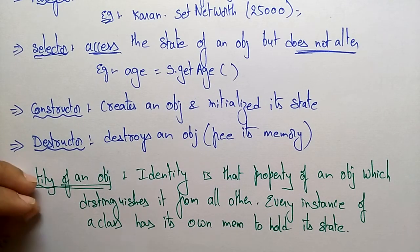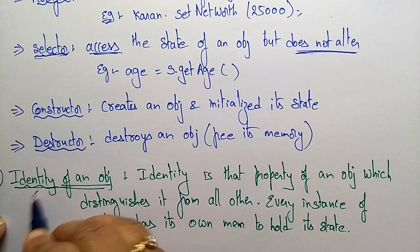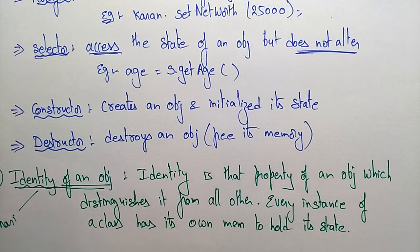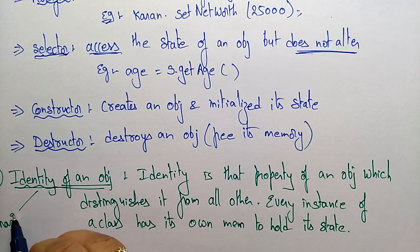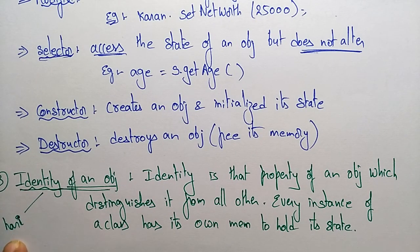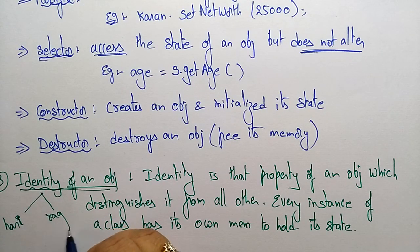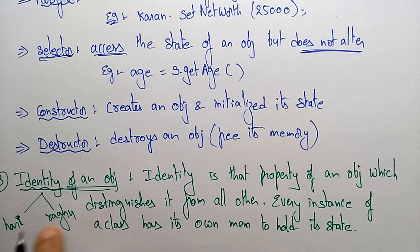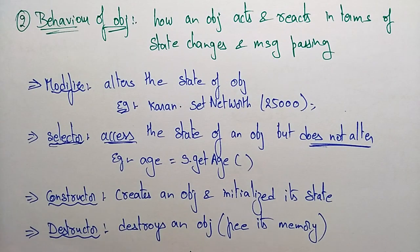In the previous example, Hari is one object — every instance of a class has its own memory to hold its state. At the same time, Raghu is another instance of the class with its own memory to hold its state. This is about the state, identity, and behavior of an object.